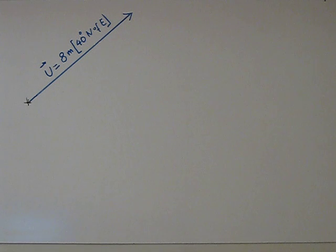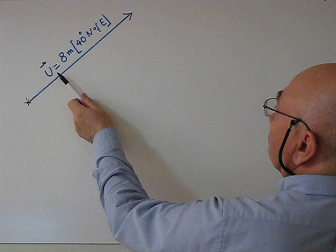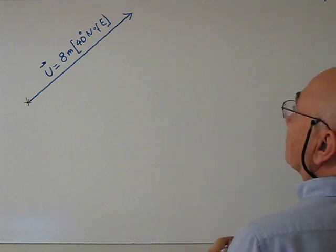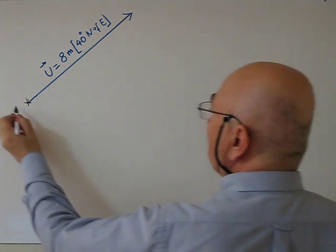I am going to talk about vector addition by using the components method. To use the component method we need to use a Cartesian coordinate system. So this is our vector u equal 8 meters, 40 degrees north of east.